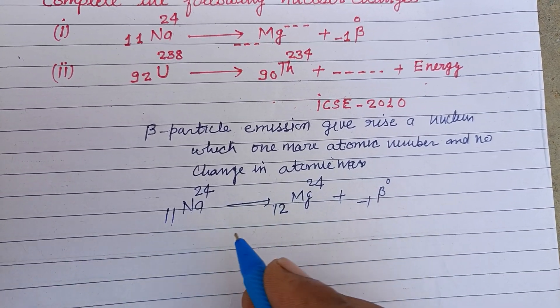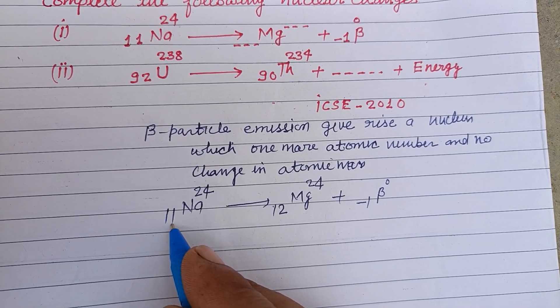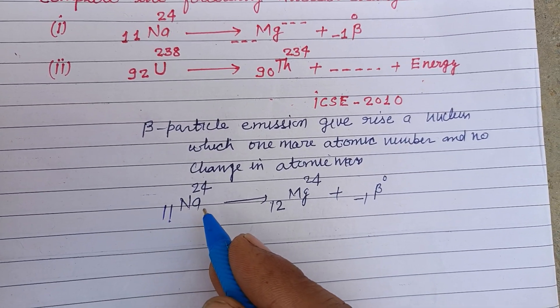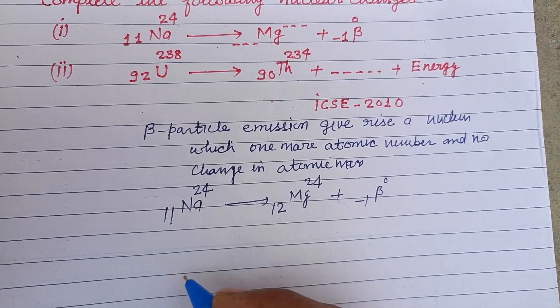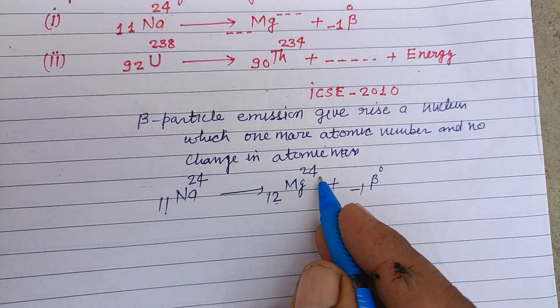When one beta particle is emitted from the nucleus of sodium radioactive element, it gives rise to 12 Mg 24.